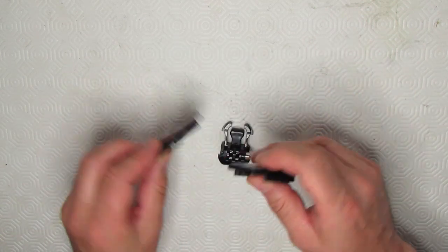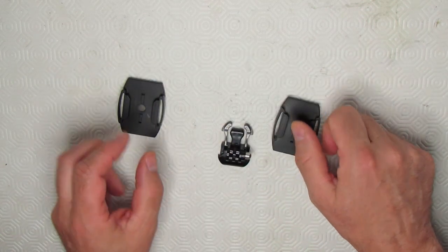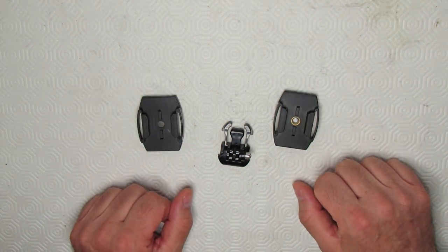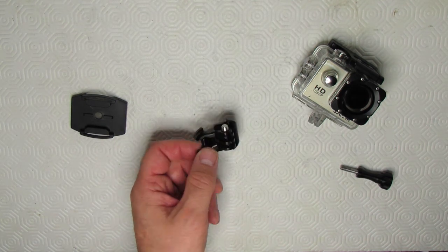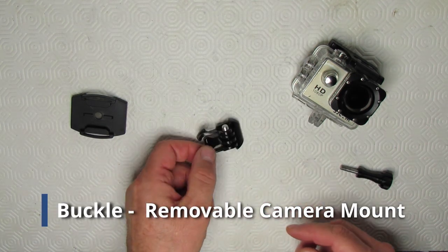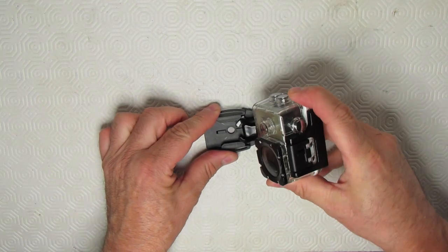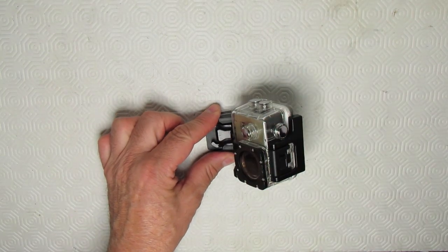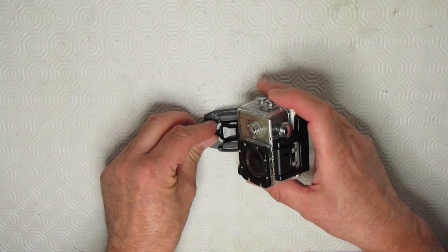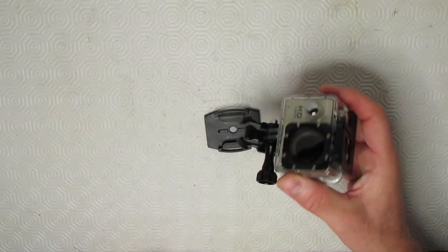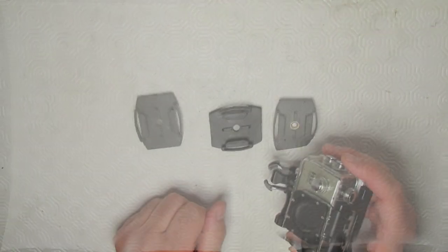Just be warned, this adhesive on the back of these sticky mounts is very good and you'll have a battle trying to take this thing off. You need one more thing to use these mounts and that's this buckle. Your camera mounts to the buckle and then you slide the buckle into the mount. And when you're done, you unclip it from the mount and your mount stays firmly in position until the next time you need it.